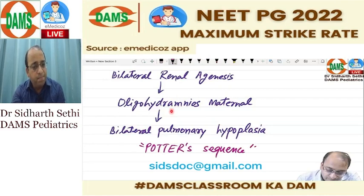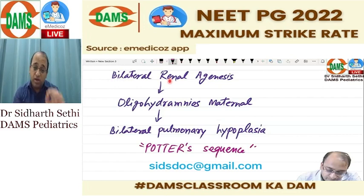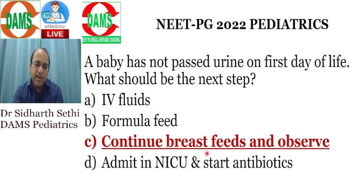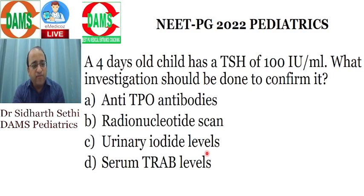If the mother has oligohydramnios, think about the baby having renal agenesis. Renal agenesis leads to severe maternal oligohydramnios, which leads to bilateral pulmonary hypoplasia in the baby — this sequence is the typical Potter sequence. The answer to the question about a baby not passing urine on day one is to continue breastfeeds, because ninety-five percent pass on the first day and ninety-nine percent pass within two days — this is completely physiologically normal.